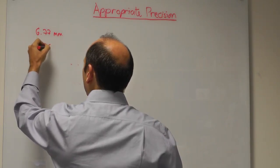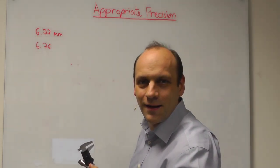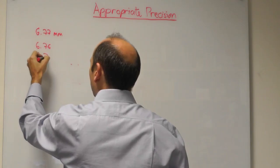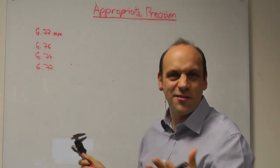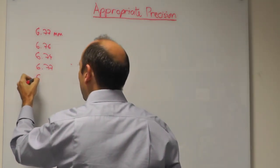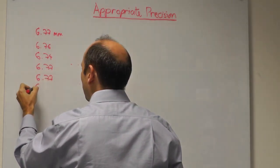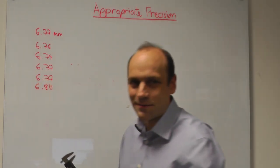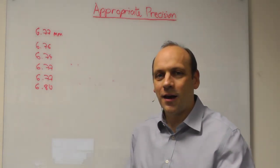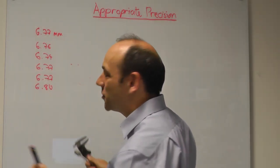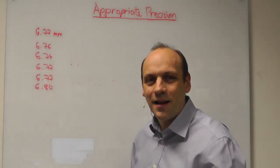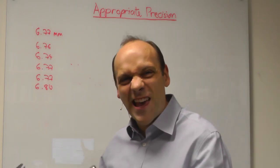6.76, 6.74, 6.77, another 2 for luck, say, 6.77 again, and 6.80 millimeters. So it looks like I've got an average there of something like plus or minus 0.02, something like that, millimeters. But I could do better than just guess.